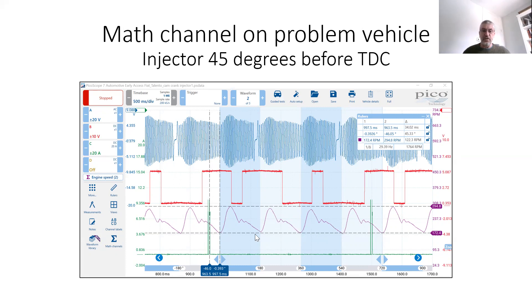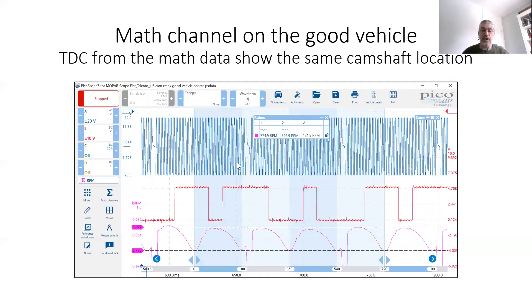So we've used the phase rulers again and then calculated when the injector fires. And we actually have got it's firing 45 degrees before TDC. But what you can also see is where TDC is in relation to the camshaft.